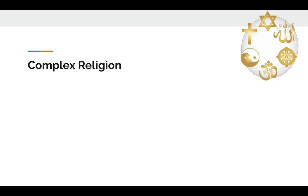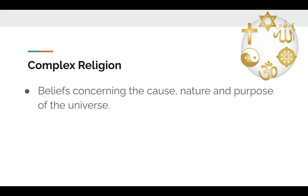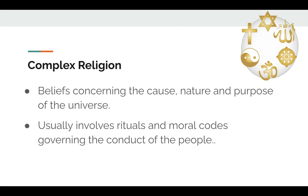The first thing I want to do is explain what those features are so you understand. When we talk about complex religion, we know that religion includes beliefs about the cause, the nature, and the purpose of the universe, and usually involves rituals and moral codes that regulate people's conduct, like the Ten Commandments, to help people know how they should live their lives. For example, I am Jewish — I belong to a congregation, a synagogue — and we go to services on Friday nights.